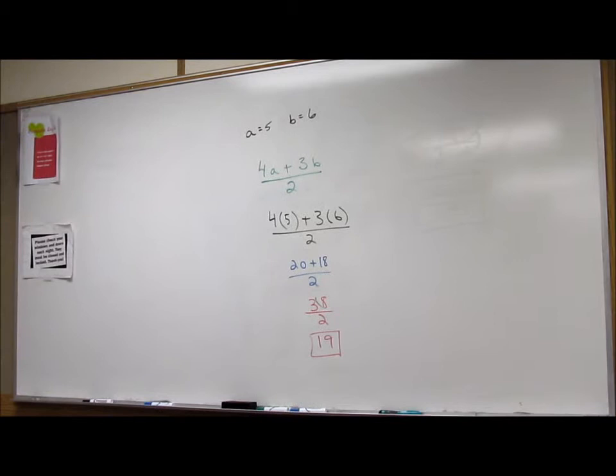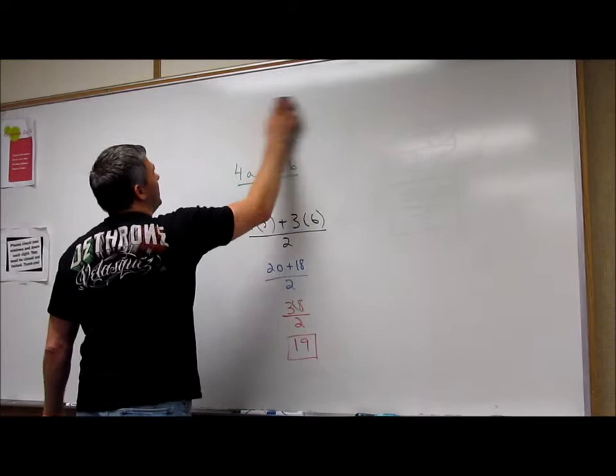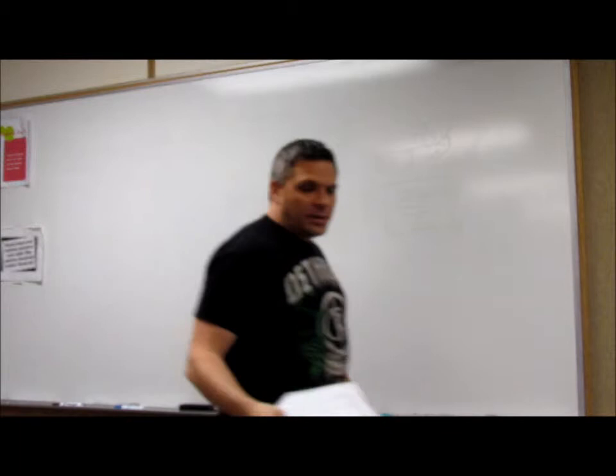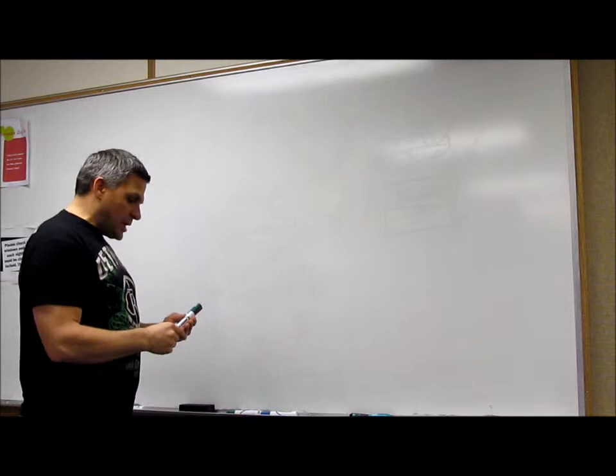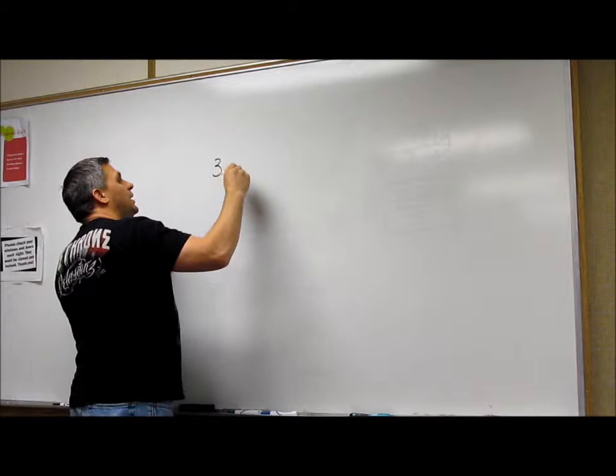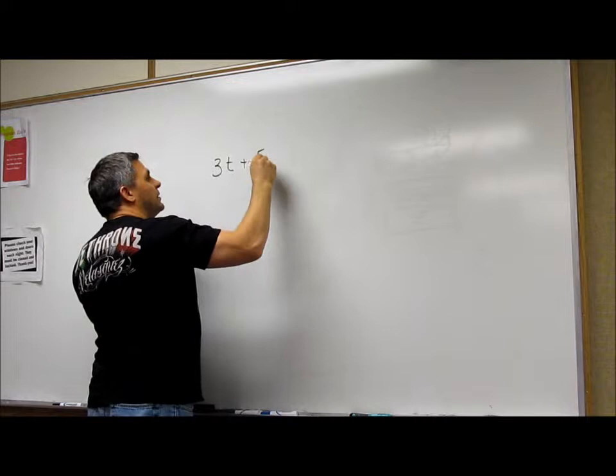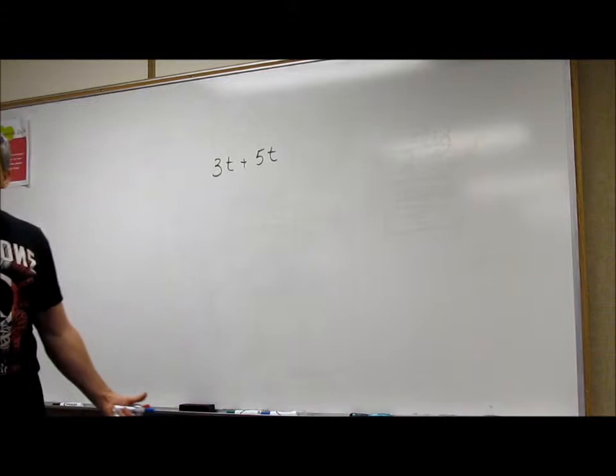So, and the last thing that is on your test, since I do have 16 minutes left. I want to go over the last part. And the last part is just collecting of like terms. So, I'm going to do a real easy one. And then, we'll do a little harder one. Okay? So, the real easy one is like 3t plus 5t. Okay?